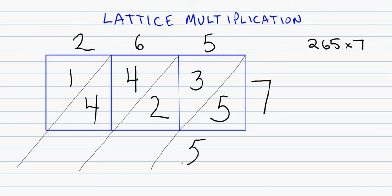5 plus nothing gives me the ones place. 3 plus 2, 4 plus 4, and 1 plus nothing. So my answer here becomes 1,855.